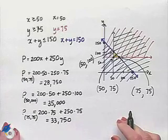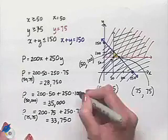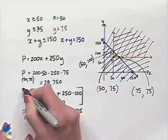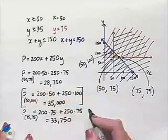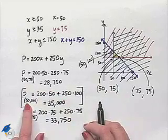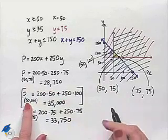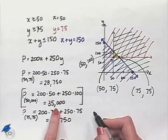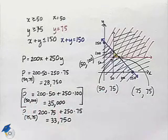Now, in the problem, we were looking for the maximum profit. That would occur with the 35,000. And the number of jet skis we'd have to manufacture per week would be 50 of the regular because our X value would be 50, and 100 of the deluxe to give us our maximum profit of 35,000.